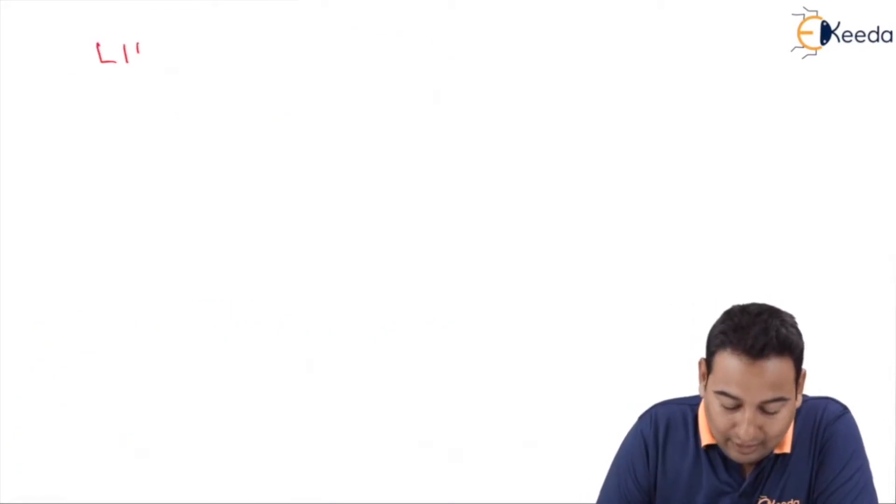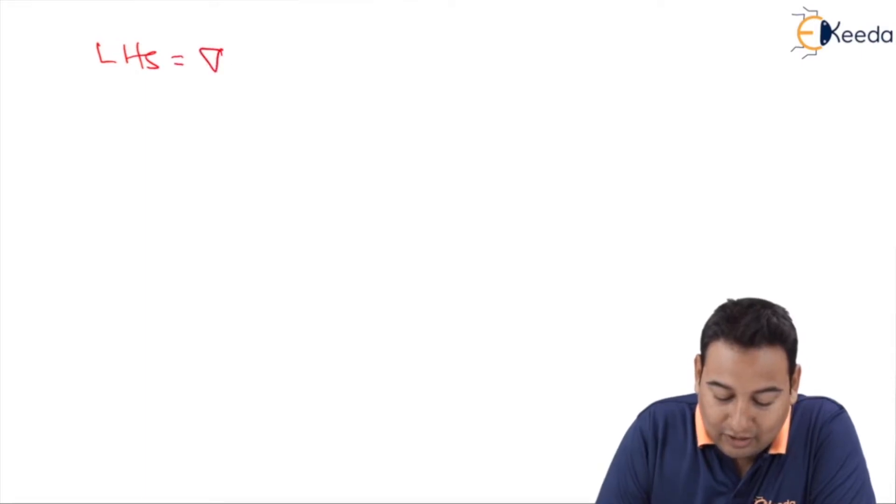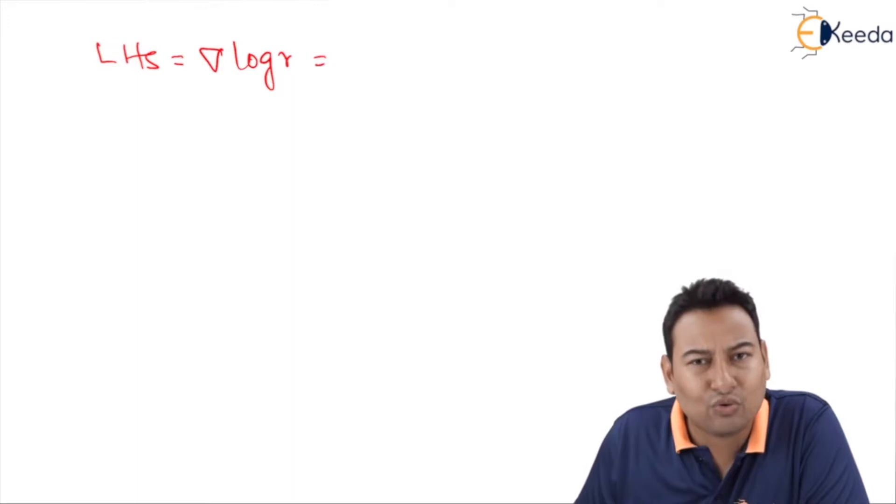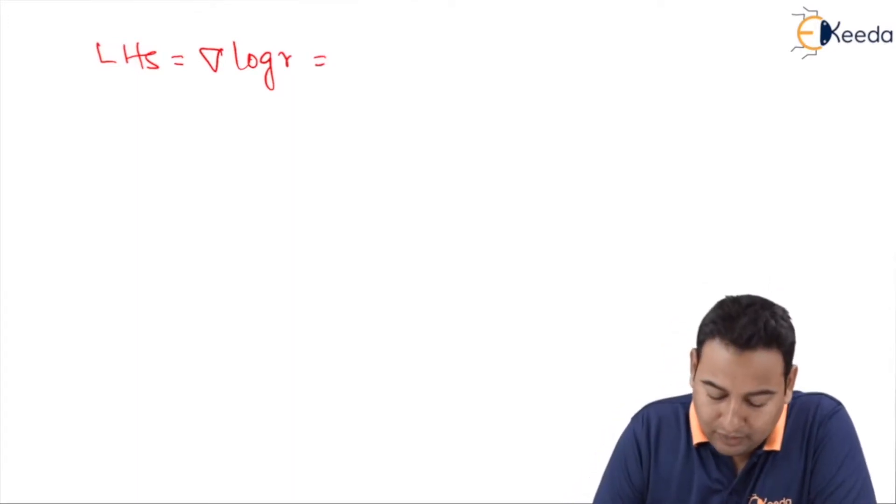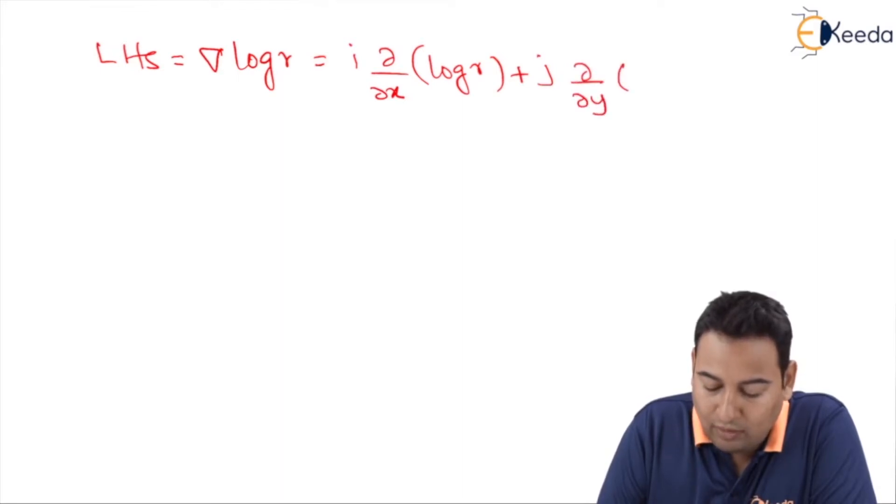Here the LHS part is del log r. Same old story - I recommend you solve this problem by yourself and for verification you can watch this video. i dou by dou x of log r plus j dou by dou y of log r plus k dou by dou z of log r.